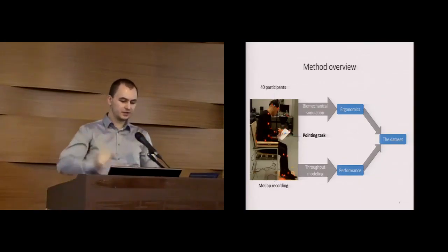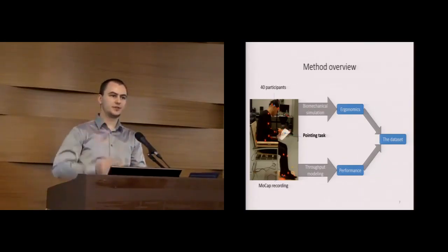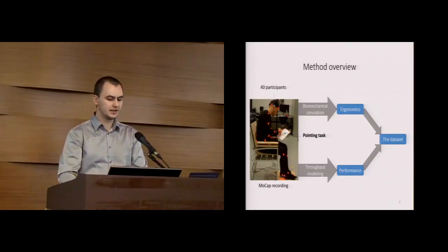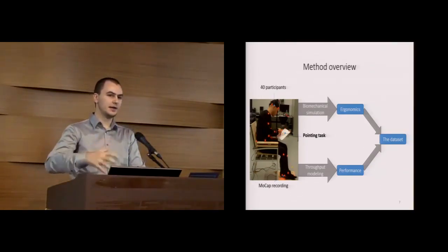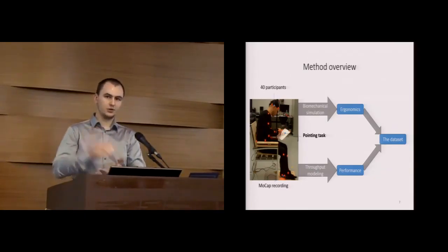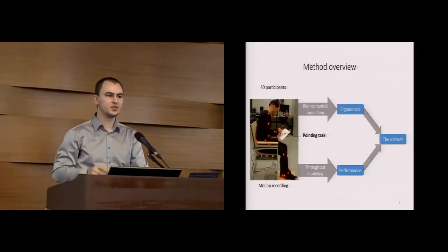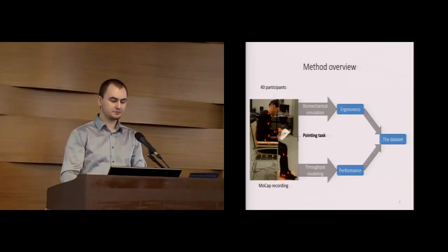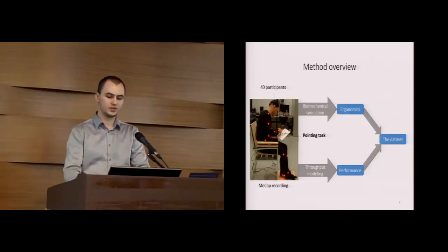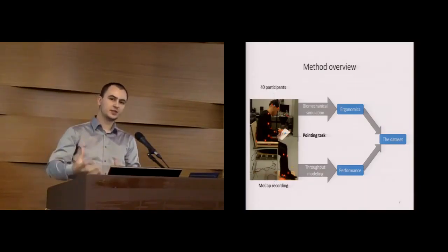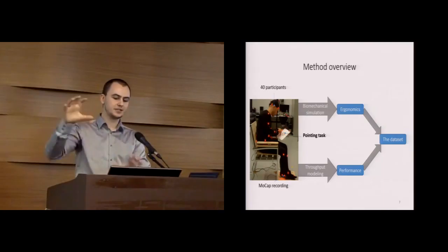After we perform the study, we have two types of analysis. First type is ergonomics analysis in which we extract ergonomics indices. We do this with biomechanical simulation and then additional processing of the simulated data. Also in ergonomics analysis there is another step in which we identify typical postures used by participants. The second pass is analysis of performance, so we model throughput using Fitts' law. Then we combine, synchronize, and consolidate these two parts of analysis into a single dataset.